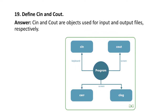Next question: define cin and cout. Cin and cout are objects used for input and output respectively. Cin is for C input and cout is for C output. The input can be given with the help of a keyboard, and you can see the output on your screen.